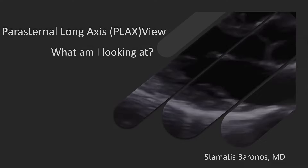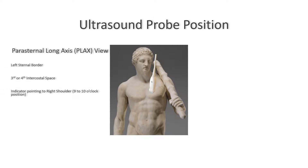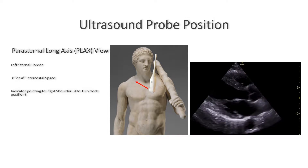The first lecture of the series is going to be on the parasternal long axis view, ways to get it and the structures you're looking at. Place the probe on the left parasternal border with the indicator of the probe pointing towards the right shoulder, or at approximately 9 to 10 o'clock. You're hoping to get an image with the ventricle perpendicular to the ultrasound beam within the image sector. If the ventricle is not relatively horizontal, you may have to move to a higher parasternal window or even put the patient in the left lateral position.